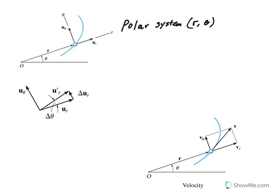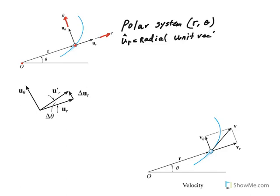My objective here is to describe velocity and acceleration using this coordinate system. I have a picture defining what is a radial axis and what is a transverse axis. When the particle is at some point along the path of motion, the radial axis is basically just the extension of the position vector R, and the theta axis is perpendicular to that. U_R is the radial unit vector and U_theta is the transverse unit vector, and remember, unit vectors have magnitude 1.